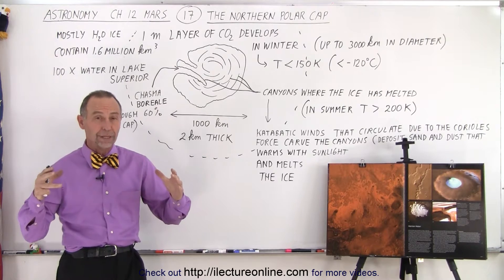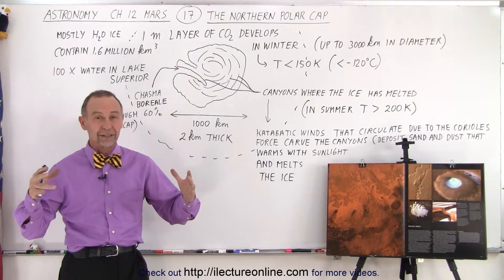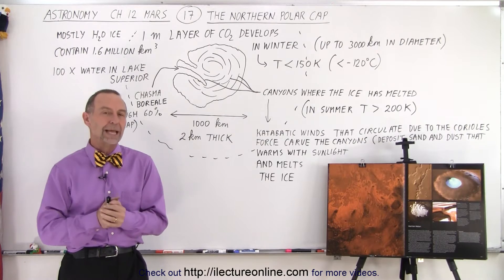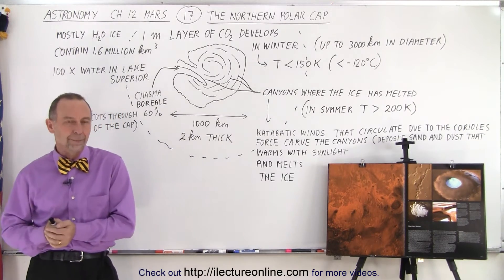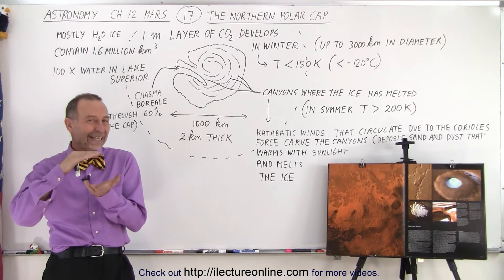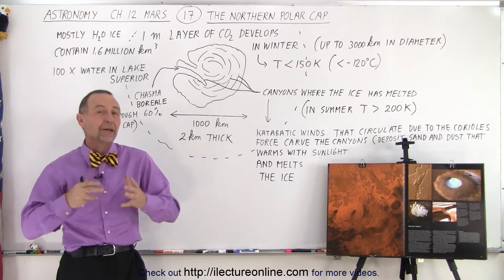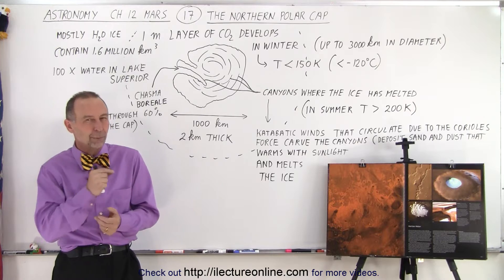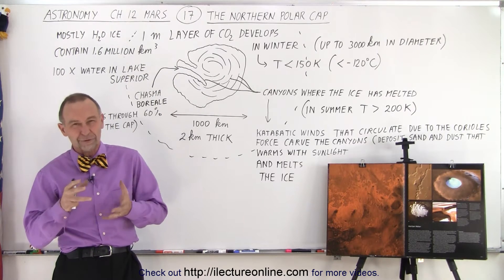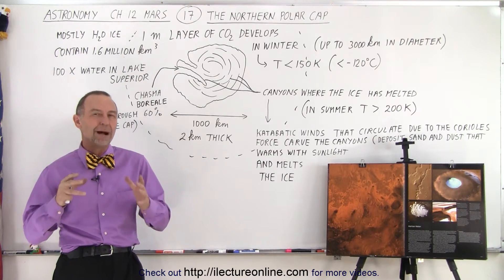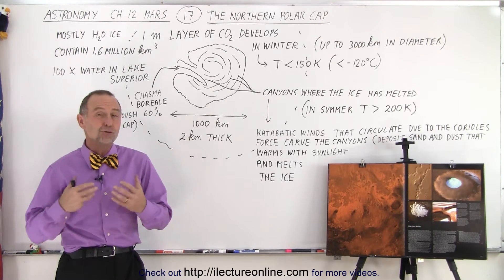Turns out that the Northern Polar Cap is substantially bigger, at least the permanent section that doesn't melt in summertime, compared to the Southern Polar Cap. However, it's not as thick and contains about the same amount of water ice, estimated to be about 1.6 million cubic kilometers, which is about 350,000 cubic miles of ice, an enormous amount.